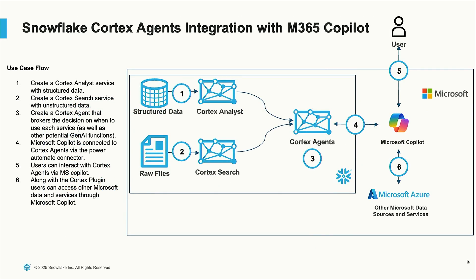The other side of it: let's say you develop a data agent or some GenAI service on your Snowflake data. You can build a chatbot inside of Snowflake using Streamlit, but what we're hearing from customers is they don't want six different chatbot experiences — they want one unified experience. Copilot is becoming a really popular place for that. What you can do today, powered by our Power Automate integration, is build a Cortex Analyst service on your structured data, a Cortex Search service on your unstructured data in Snowflake, wrap a Cortex agent on top of it, and easily connect to it from Copilot alongside any other services or agents.